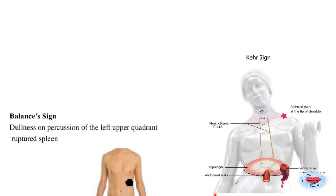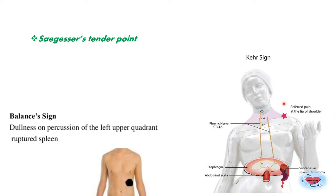Kehr's sign is pain felt over the left shoulder or left tip of the shoulder after foot elevation, due to phrenic nerve stimulation. Saegesser's sign (phrenic point sign) — in severe intracapsular splenic bleeding, compression over the phrenic point causes pain referred to the border of the rectus abdominis muscle.